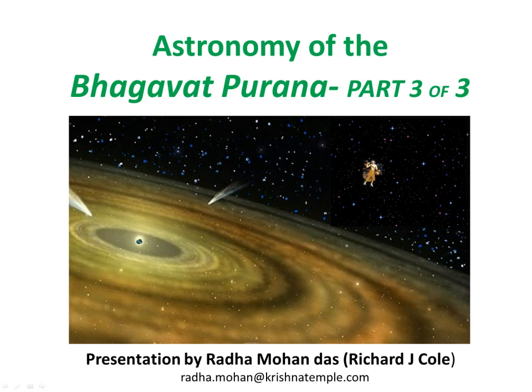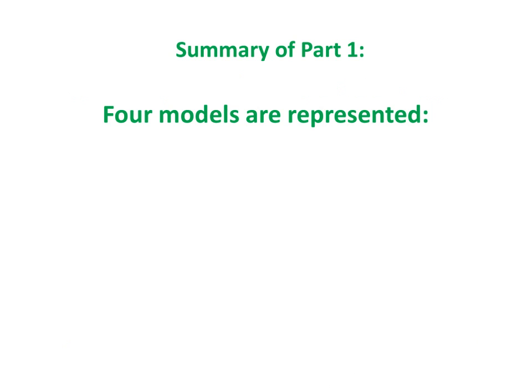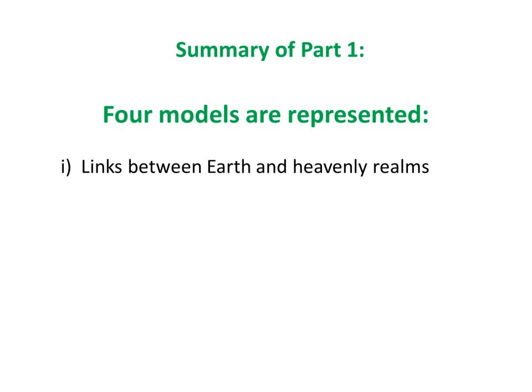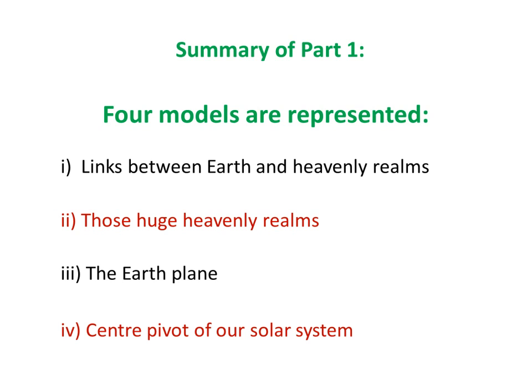The Astronomy of the Bhagavad Purana, Part 3 of 3. If you haven't seen Parts 1 and 2 yet, please do so, otherwise you won't be able to appreciate this final section. But let's have a look at the summary of Part 1. In the fifth canto of the Bhagavatam, four models were connected to the Earth and the island of Jambudvipa — links between the Earth and Heavenly Realms, those huge Heavenly Realms, the Earth plane, and a centre pivot of our solar system.